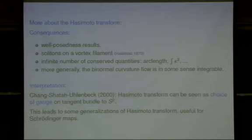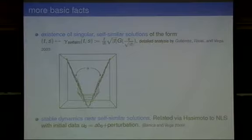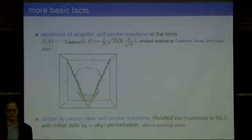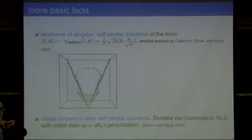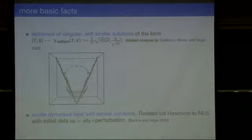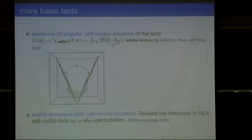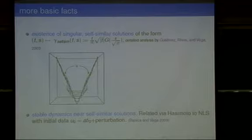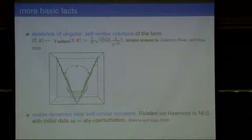Another basic solution: at time zero, the initial data is the union of two half-lines, creating a corner. This evolves in a self-similar fashion. There is a one-parameter family of such solutions parametrized by the angle theta. A detailed analysis has been carried out using harmonic analysis techniques including stationary phase. Banica and Vega have also studied initial data that is a perturbation of this corner, proving results showing stability properties of the dynamics in that setting.